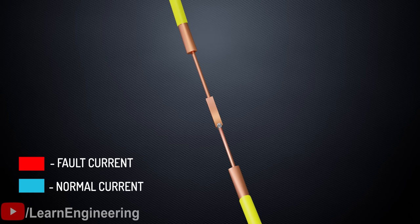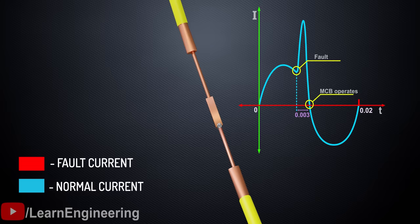Before getting more into the MCB design, a small note about the current direction. An MCB gets activated in less than 3 milliseconds, which is way lower than the half-cycle time period of an alternating current. So, it is okay to show the current flow in a single direction throughout the analysis.